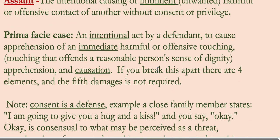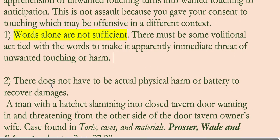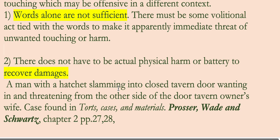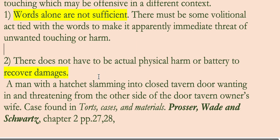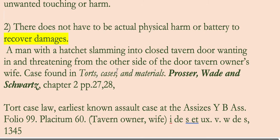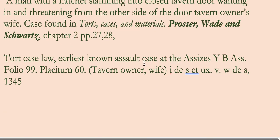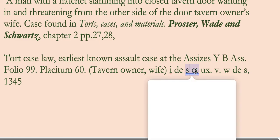So let's jump over to point two: there does not have to be actual physical harm or battery to recover damages. Now we're going to go over something that happened during the time when men owned their wives and women didn't have rights as much — the theory that the two become one, and the man rules. Back in the 1300s, a man was a tavern owner and his wife was inside too.